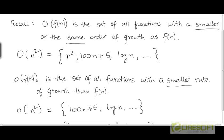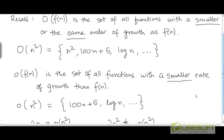Little-o only contains functions that have a strictly smaller rate of growth than f. For example, the function n is not present in the set little-o(n²), because n² has the same rate of growth as n².